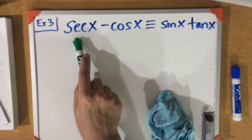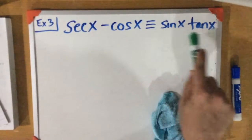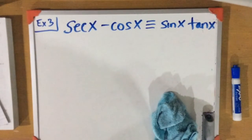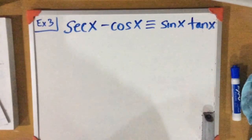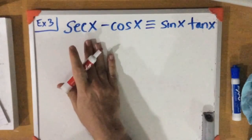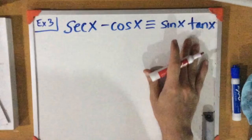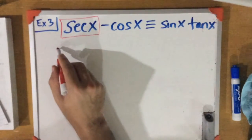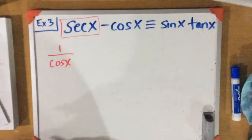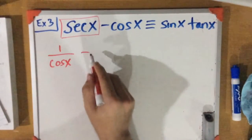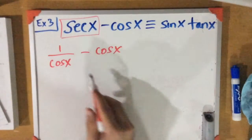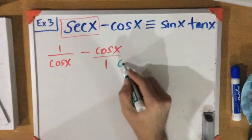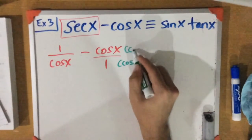All right, example three says: secant x minus cosine x is identical to sine x times tan x. Keep in mind the tips from earlier. Both sides are fairly simple, but let's work the left side. Let's talk about secant x — isn't secant x the same thing as 1 over cosine x? So we have 1 over cosine x minus cosine x. To subtract these, they need the same denominator, so let's multiply cosine x by cosine x over cosine x.